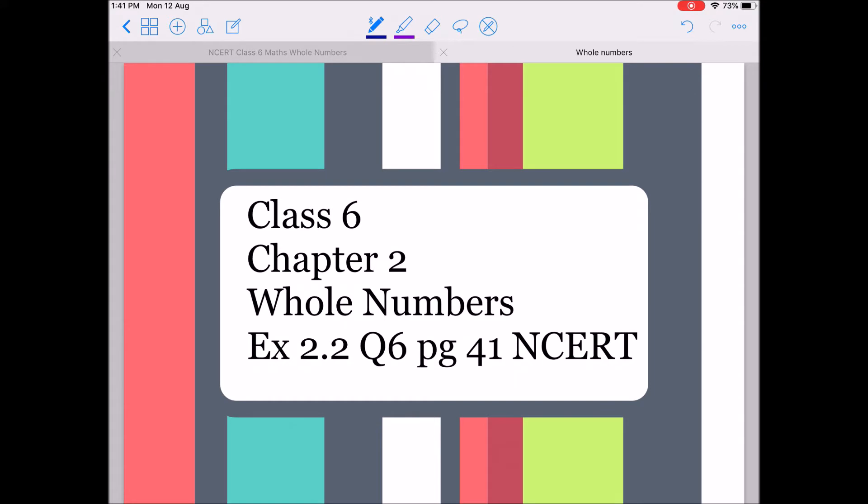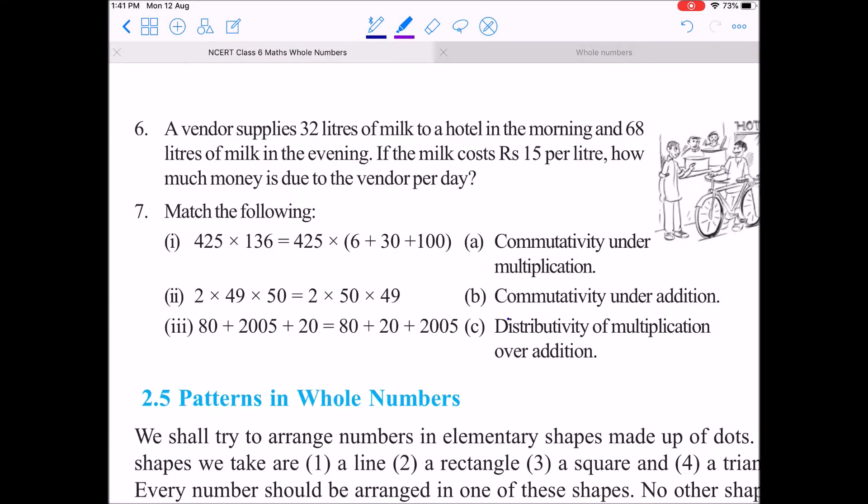Hello students, today we will take up Chapter 2 Whole Numbers of Class 6, Exercise 2.2, Question Number 6. Let's begin by reading the question. The question says: A vendor supplies 32 liters of milk to a hotel in the morning